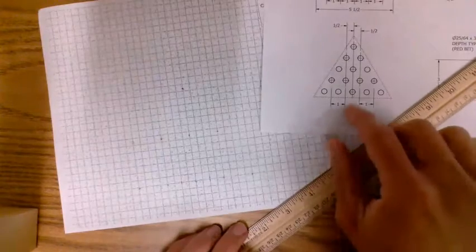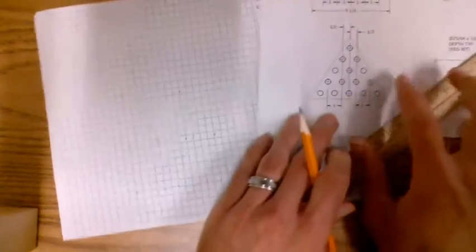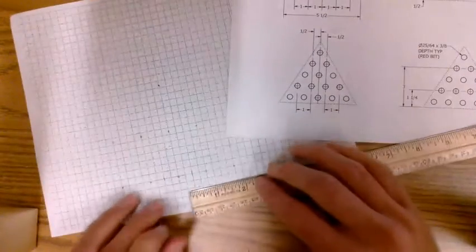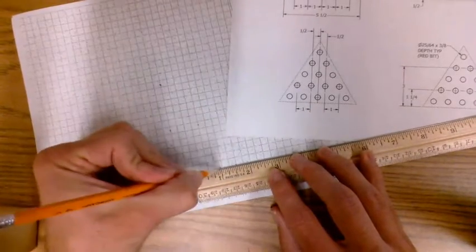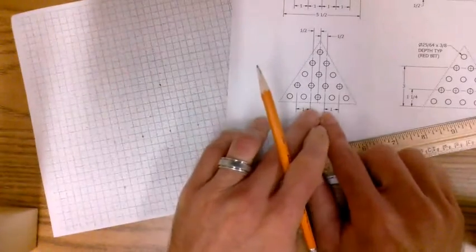And you'll see why we marked it with a line instead of a dot, okay? So we got that, and then from there, we'll mark another line one inch over from that line. And you can see that right here.